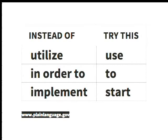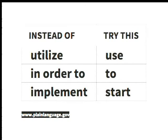Here are a few word swaps: instead of 'utilize,' try 'use' — it's a much kinder, less harsh word. 'In order to' can often be replaced by 'to.' And 'start' is often a better alternative to 'implement.' There's a whole ton of resources at plainlanguage.gov — I highly recommend it. They have lots of tips and resources on how to apply plain language to any of your texts.